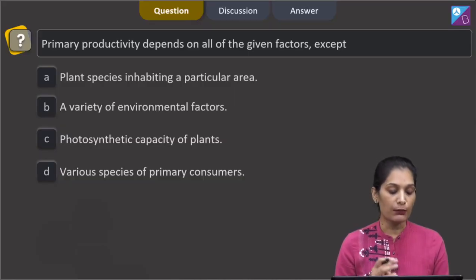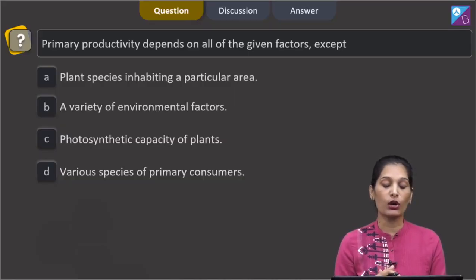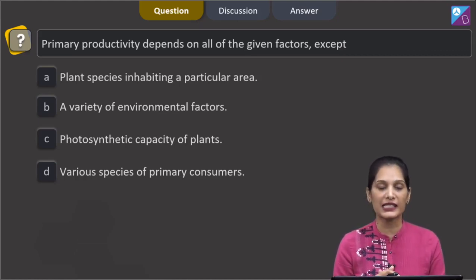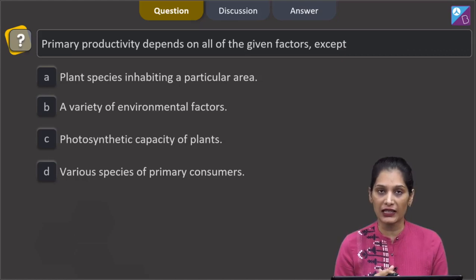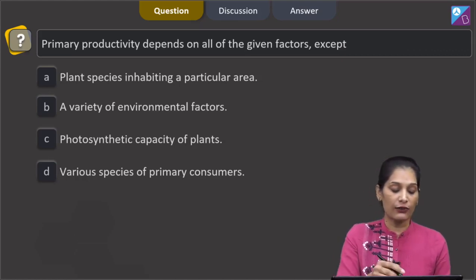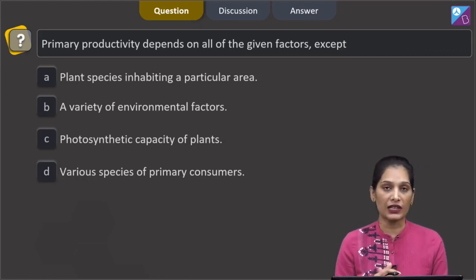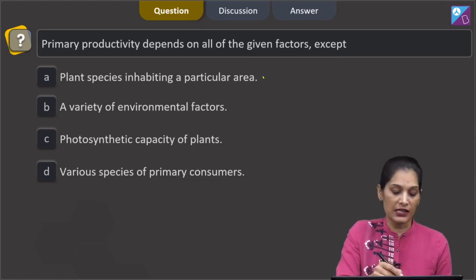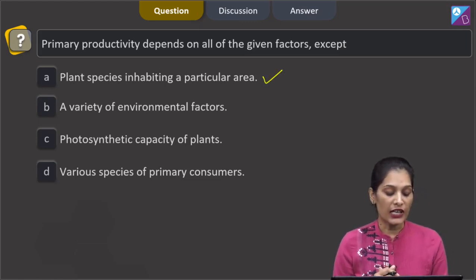This question is asking: primary productivity depends on all of the given factors except. Option a: plant species inhabiting a particular area - definitely, if the plant species of an area are different, the primary productivity depends. Option b: a variety of environmental factors, this is also true.